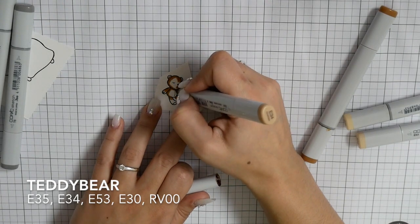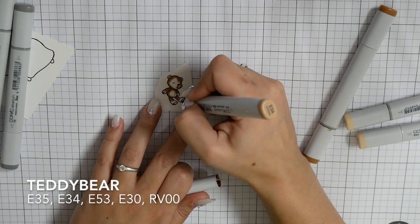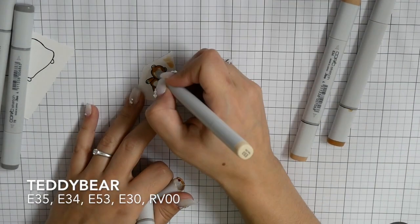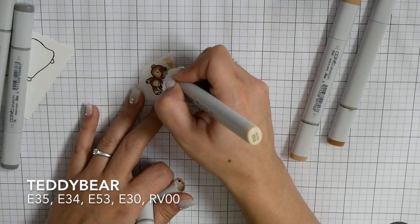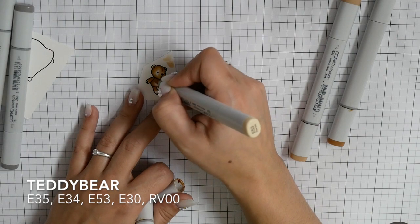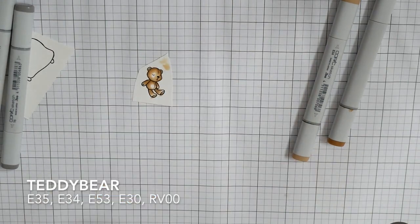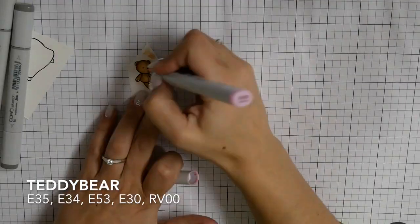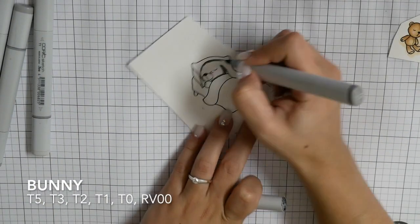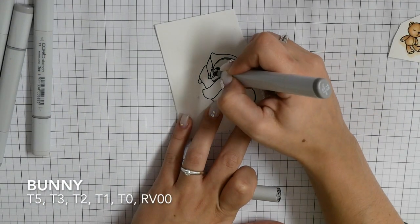For my teddy bear I am using E35, E34, E53, E30, and RV00 for the cheeks. I am starting with my darkest color and blending in with my lightest color.